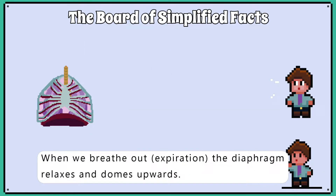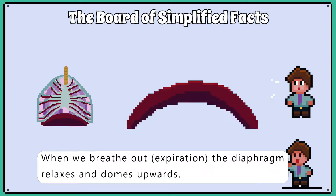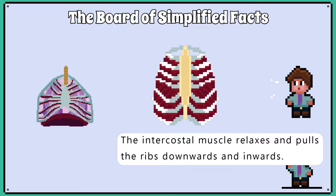When we breathe out — expiration — the diaphragm relaxes and domes upwards. The intercostal muscles relax and pull the ribs downwards and inwards.